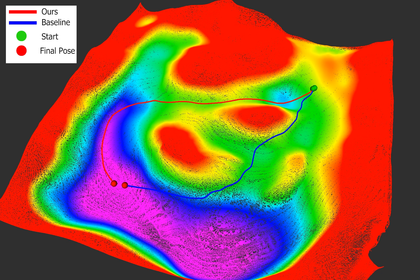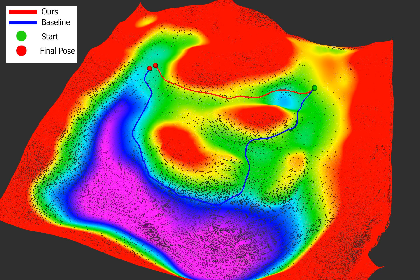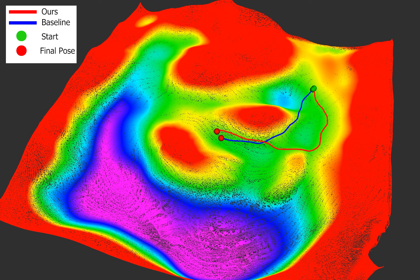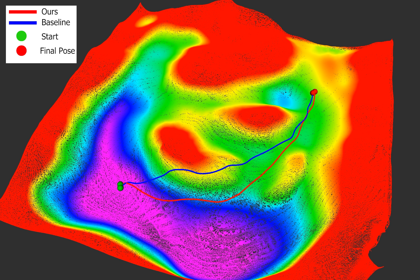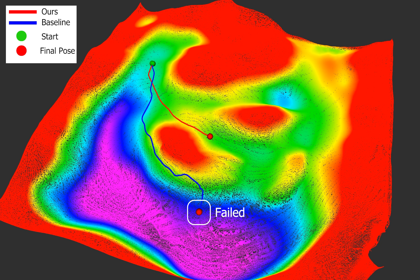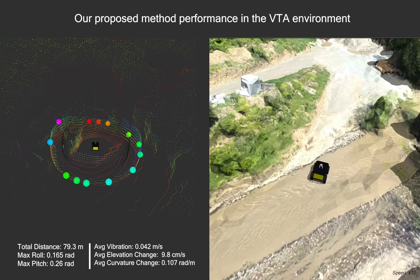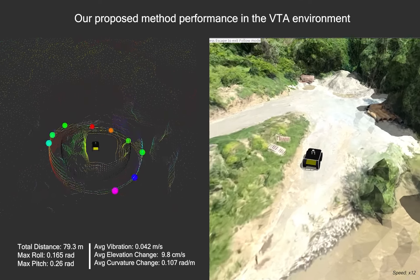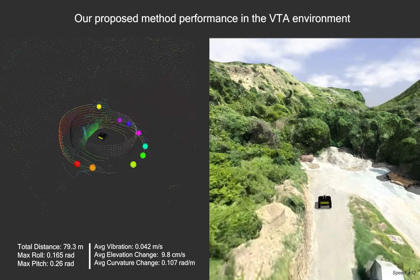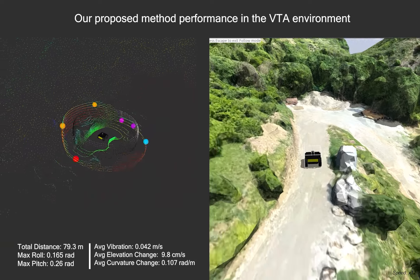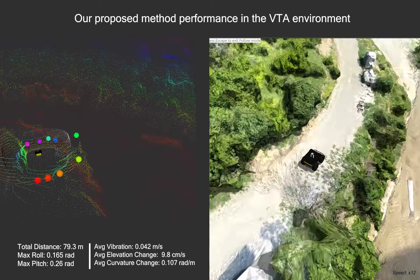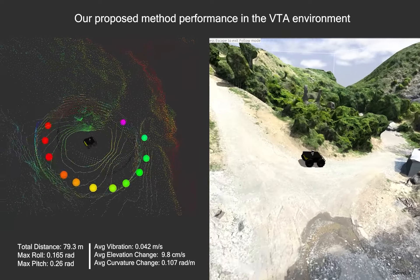Here we present a compilation of paths chosen by both our method and the baseline, offering a comparative view. Within the VTA environment, our method facilitated the robot's successful navigation along a path characterized by two sharp curves.